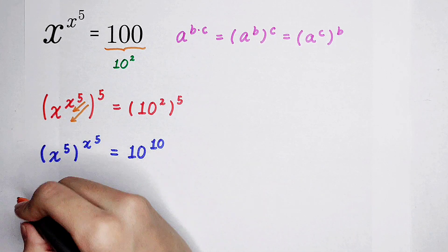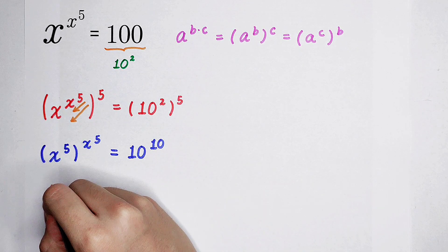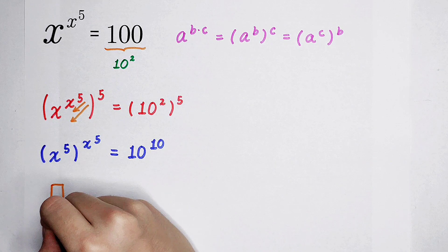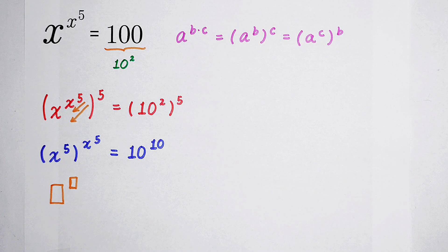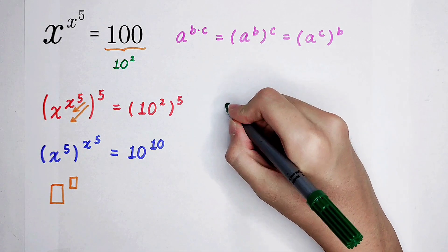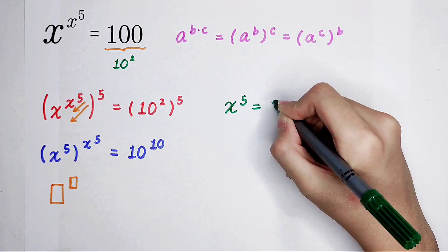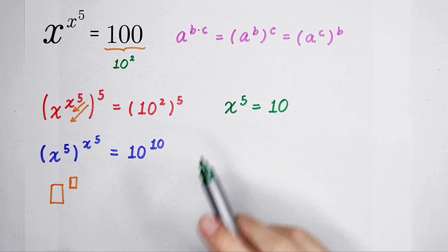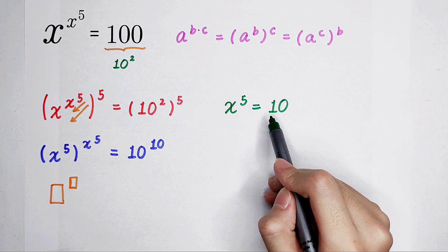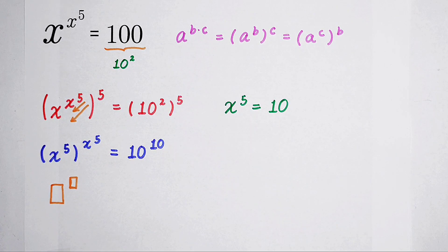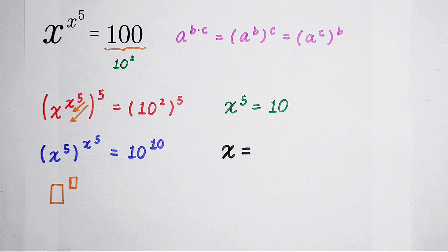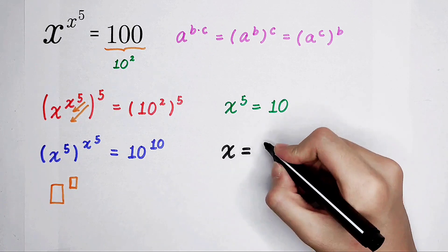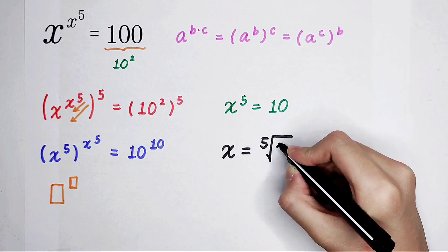The left-hand side and the right-hand side both have the form: something raised to the power of itself. Of course, we can decide the value of x now. We get x to the power of 5 is equal to 10. Therefore, x to the power of 5 equals 10. What's the value of x? Because 5 is odd, there is only one root — that is positive, the fifth root of 10.